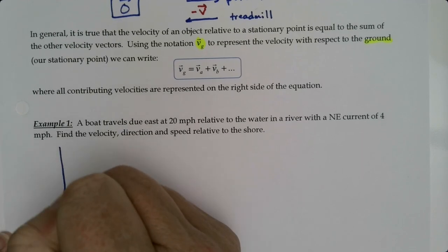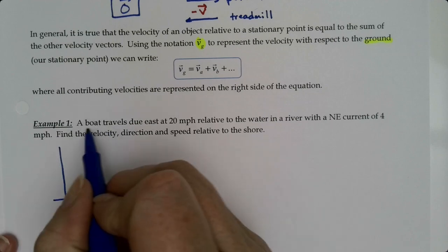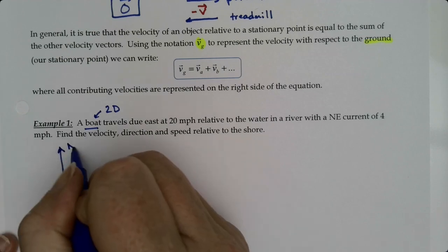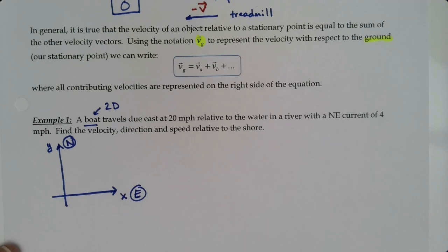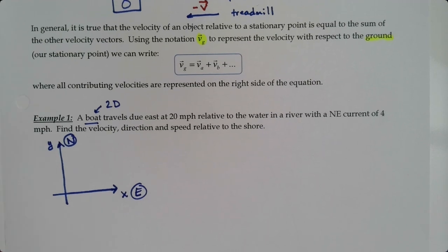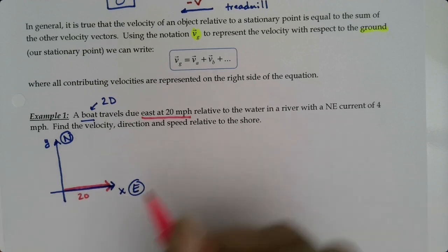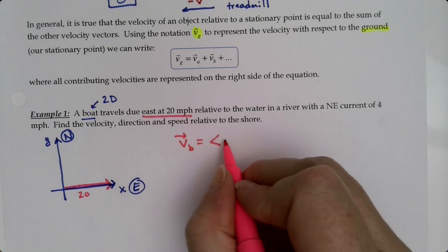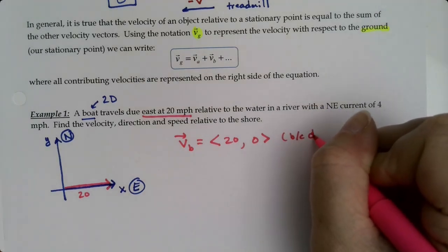Let's draw a picture. This is two-dimensional—this boat isn't flying in the air, it's in the water, so this is a 2D problem. We have north as the positive y-axis and east as the positive x-axis. The boat is traveling east at 20 miles per hour, so the velocity of the boat is <20, 0> because it's due east.